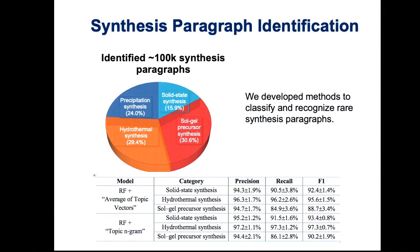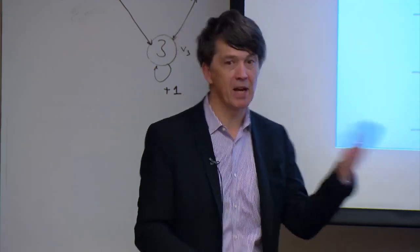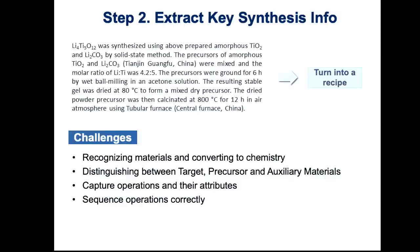How do we do in terms of classifying paragraphs? This works reasonably well. For solid-state synthesis, we have precision of about 94% and recall of about 90%. Precision is: if I take 100 paragraphs and label them solid-state synthesis, how many actually are? Recall is: how many did I miss? I've missed about 10% that were solid-state synthesis. We can essentially extract four types of synthesis for now.